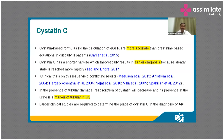Cystatin C has a shorter half-life, meaning it is more sensitive and you can diagnose AKI earlier than using creatinine. But this is not 100 percent — there are studies saying it is very sensitive and reliable, and there are studies saying the opposite. So we probably have to wait a little longer before we depend on cystatin C for diagnosing AKI.